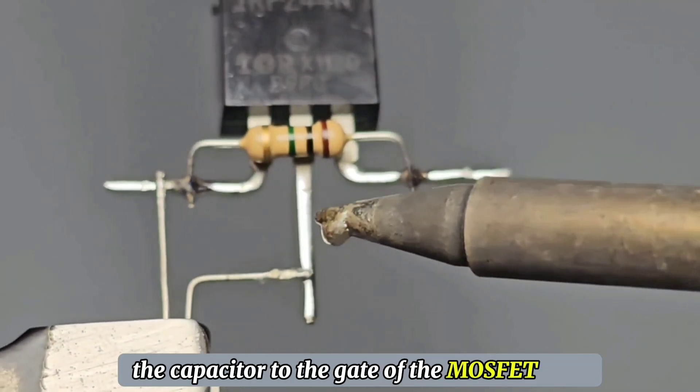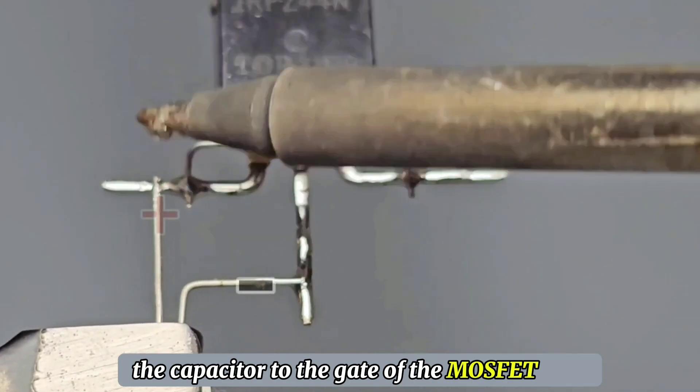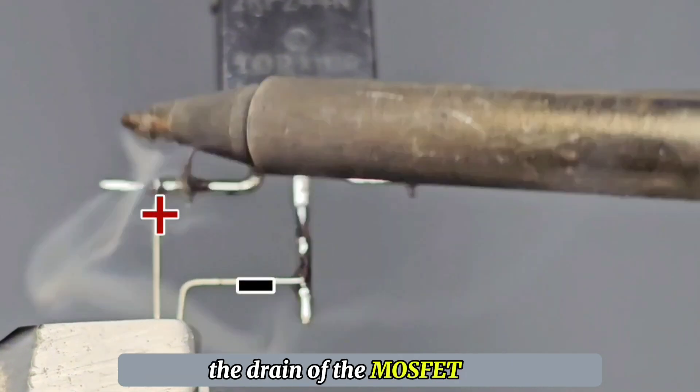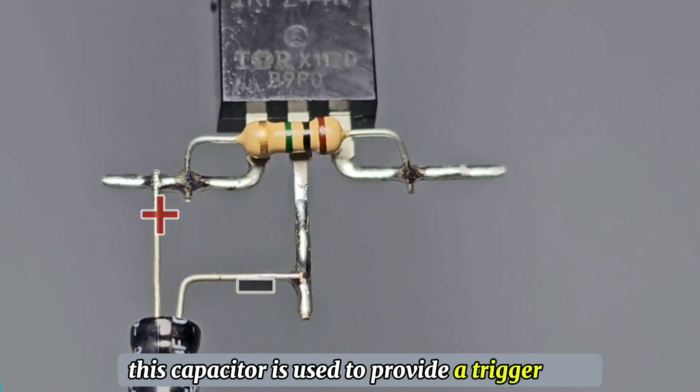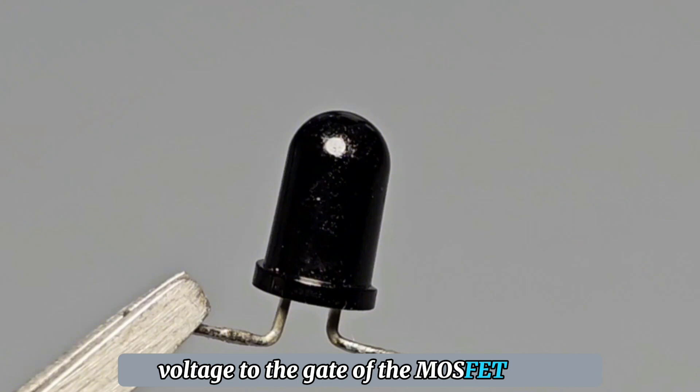Connect the positive terminal of the capacitor to the gate of the MOSFET. The negative terminal is connected to the drain of the MOSFET. This capacitor is used to provide a trigger voltage to the gate of the MOSFET.